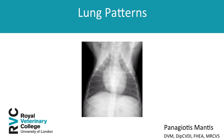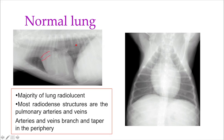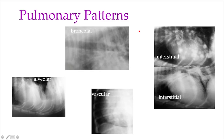The normal lung is radiolucent and it only contains arteries and veins that we can actually normally see. We can see the arteries and veins as they appear tubular and become thinner as they go towards the periphery — a very simple structure to see radiographically. Lung patterns come to explain some of the changes and help us organize them into appearances.